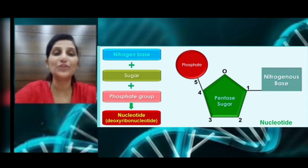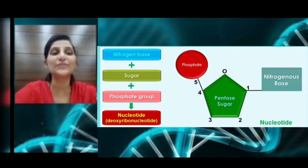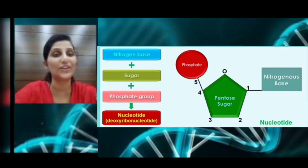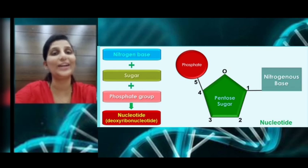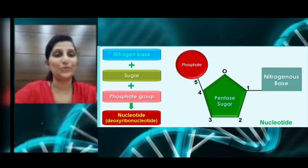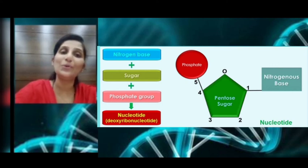To form a nucleotide from a nucleoside, a phosphate group attaches to the fifth carbon atom of the pentose sugar, as you can see in the figure. This forms the nucleotide, which is the monomeric unit in the polynucleotide chain of the nucleic acids. So nitrogenous base plus pentose sugar plus phosphate group together form a nucleotide. In DNA it is called a deoxyribonucleotide, whereas in RNA it is called a ribonucleotide.